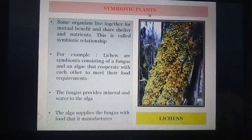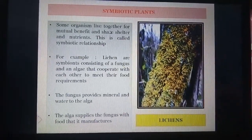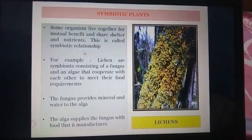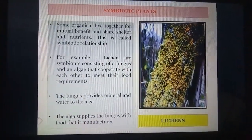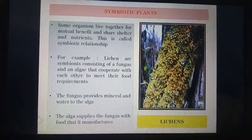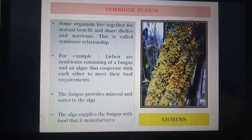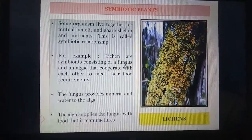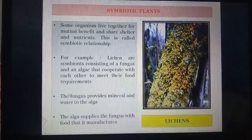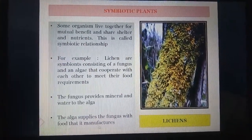The last category is symbiotic plants or symbiotic relationships. Some organisms live together for mutual benefit and share shelter and nutrients; this is called a symbiotic relationship. For example, lichens are symbionts consisting of a fungus and an alga that cooperate with each other to meet their food requirements. An alga is an autotroph that can prepare its own food; a fungus is a saprotroph that depends on dead and decaying organisms for nutrition. This association is very important: the fungus provides minerals and water to the alga, and the alga supplies the fungus with food that it manufactures.